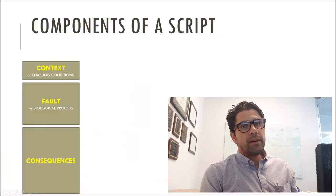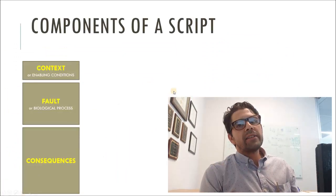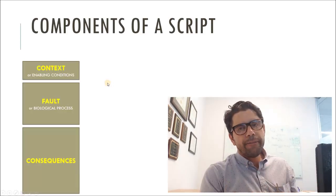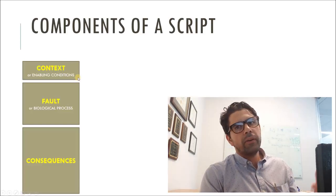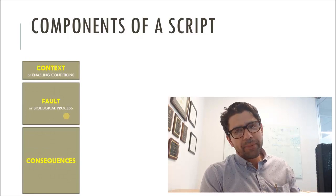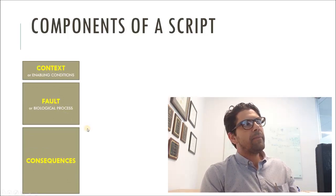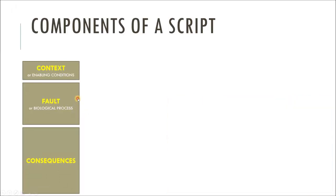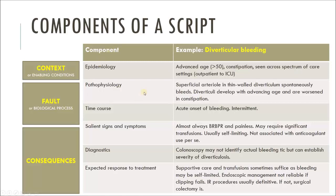When we talk about what goes into an illness script, experts think about diseases in three ways. First, the context or enabling conditions that cause the disease to develop — for acute myocardial infarction, that's risk factors like smoking, dyslipidemia, and older age. Second, the fault or biological process underpinning the disease — for MI, that's plaque rupture leading to platelet aggregation and ultimately myocardial ischemia. Third, the consequences — EKG changes, pain, dyspnea, and diaphoresis. Practically, when teaching, the components of an illness script include epidemiology, pathophysiology, time course, salient signs and symptoms, findings on diagnostic tests, and expected response to treatment.